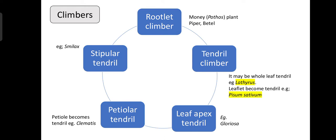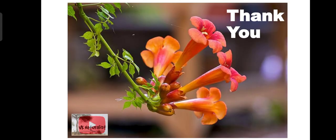Other climbers include rootlet climbers, with examples such as money plant, Piper, and betel. Another type is tendril climbers — the whole leaf may become a tendril, as in Lathyrus, or leaflets become tendrils, as in Pisum sativum. Other types include leaf apex tendrils, as in Gloriosa; petiole becoming a tendril, as in Clematis; and stipular tendrils, as in Smilax.